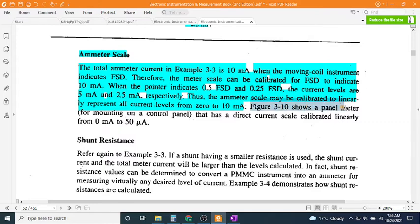Figure 3-10 shows a panel meter for mounting on a control panel that has a direct current scale calibrated linearly from 0 mA to 50 μA.